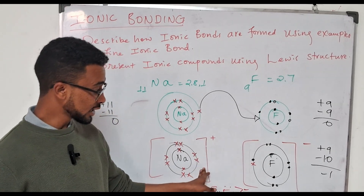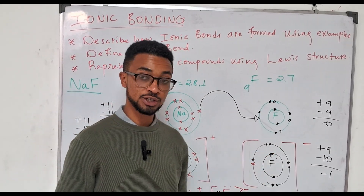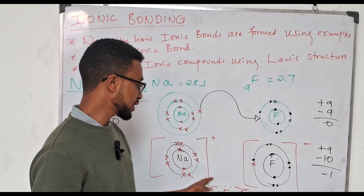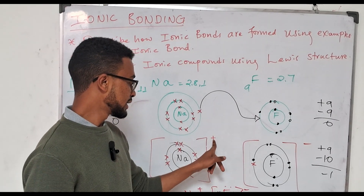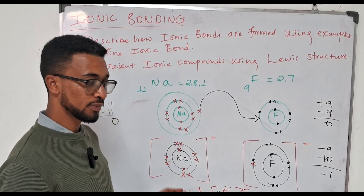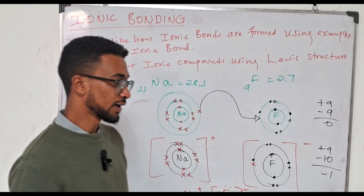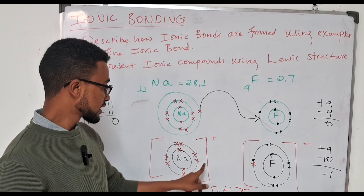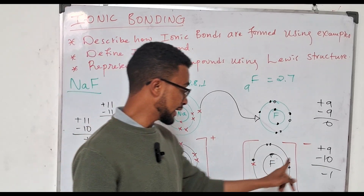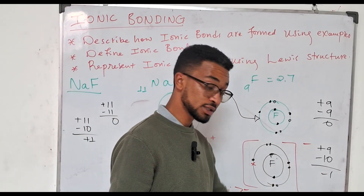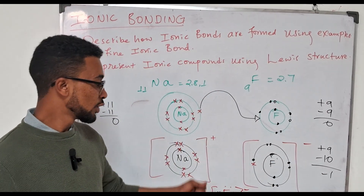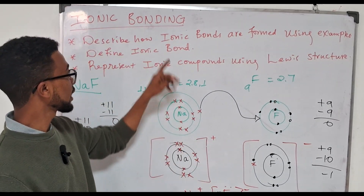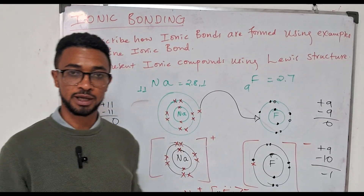Sodium is now a positively charged ion and fluorine is a negatively charged ion. There will be an electrostatic force of attraction between them. As you may remember from physics, opposite charges attract each other. This attraction between the positively charged sodium ion and the negatively charged fluoride ion is known as ionic bonding.